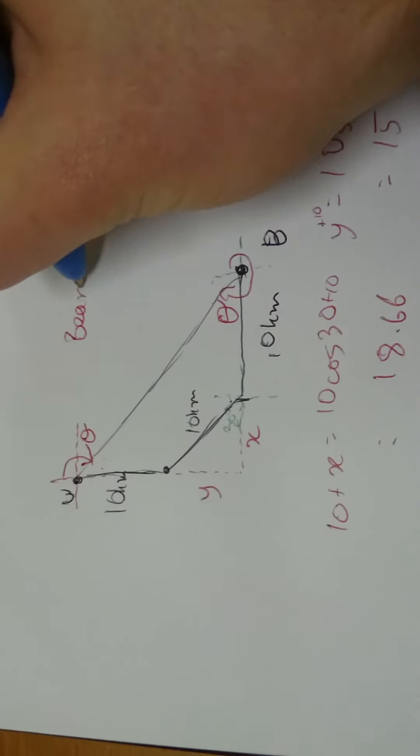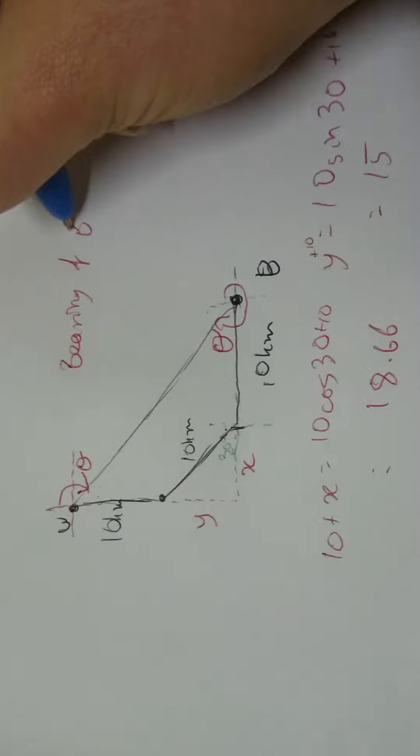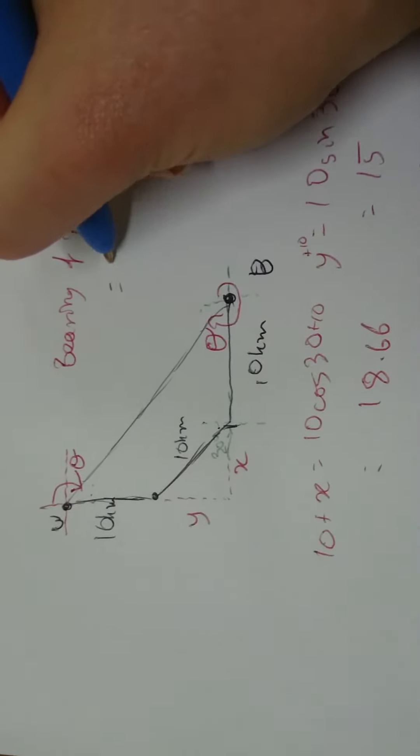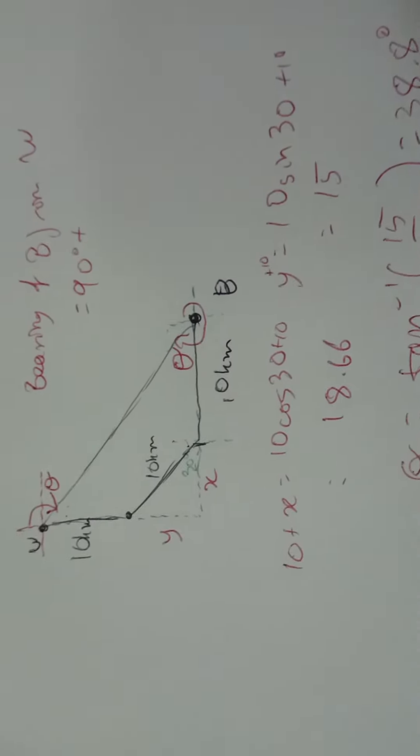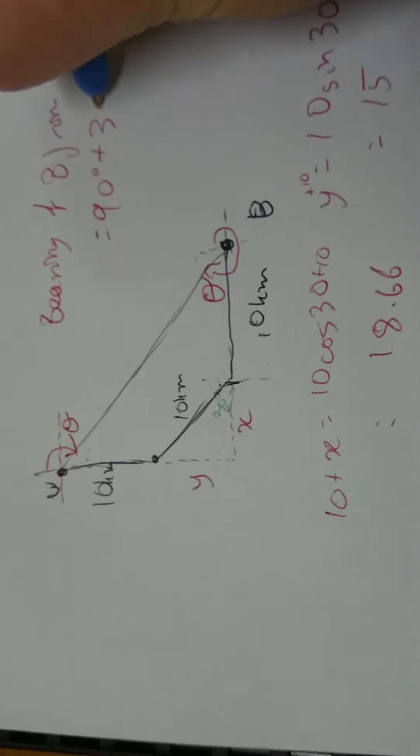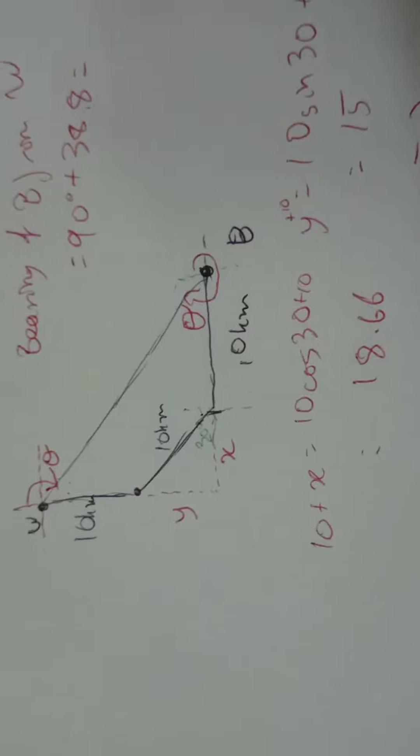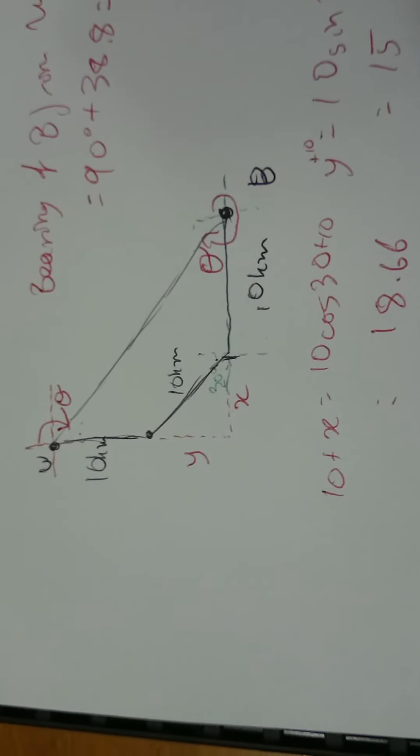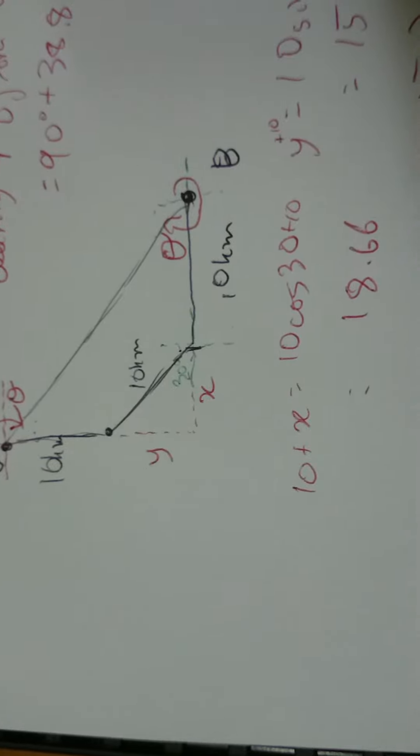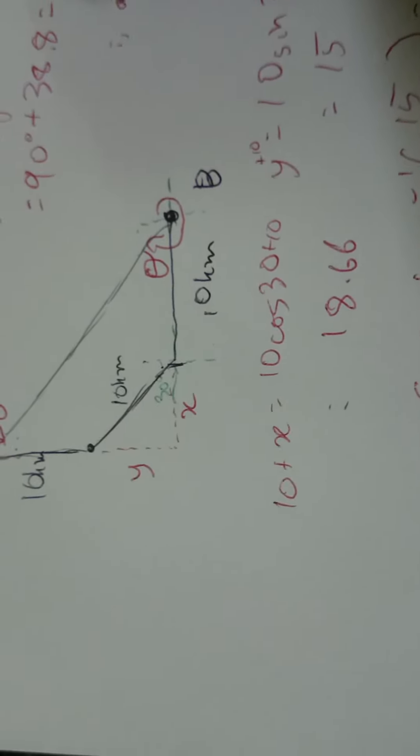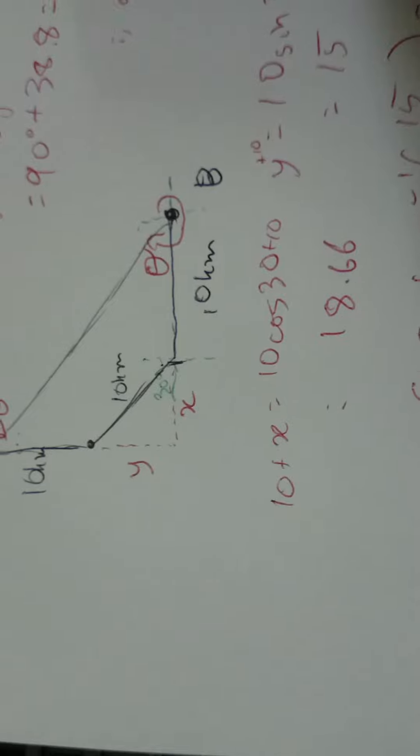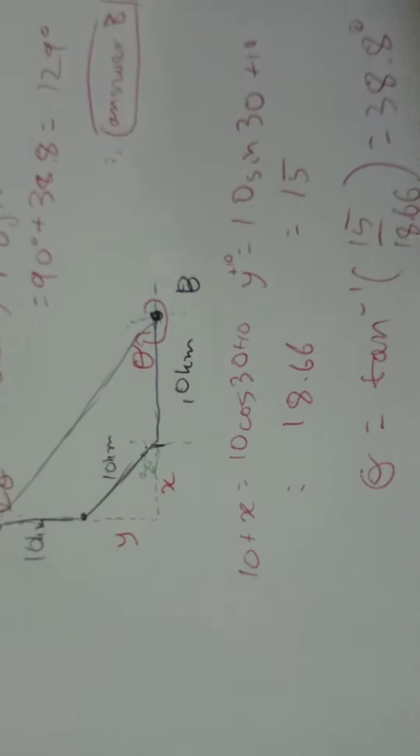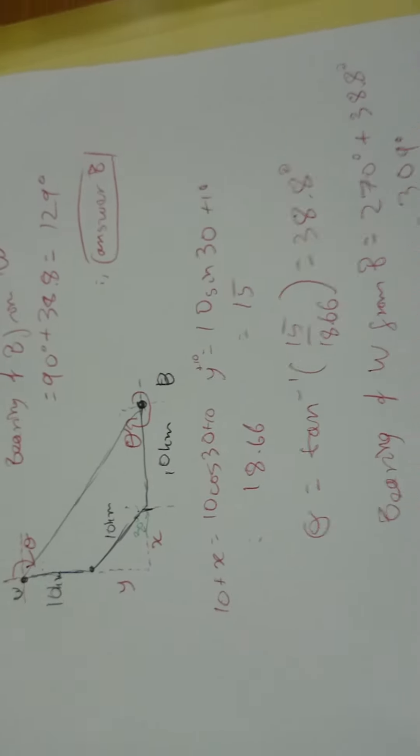So, the bearing of B from A, from W, sorry, equals 90 degrees plus our 38.8, which equals 129 degrees, which is answer B. I hope that helps. Let me know if there's anything that you are still confused by.